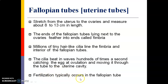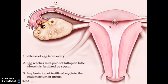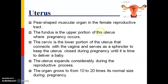Fertilization typically occurs in the fallopian tube. Sperm comes and meets the egg, which is then fertilized. The egg is released from the ovary, travels to the midpoint of the fallopian tube where it is fertilized by sperm. The fertilized egg then implants into the endometrium of the uterus.